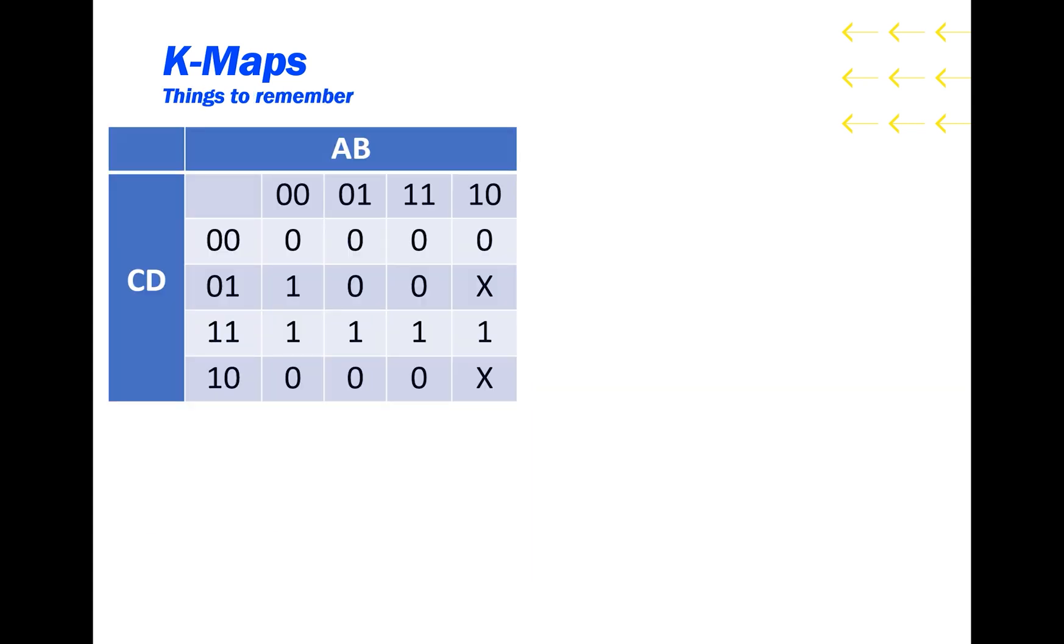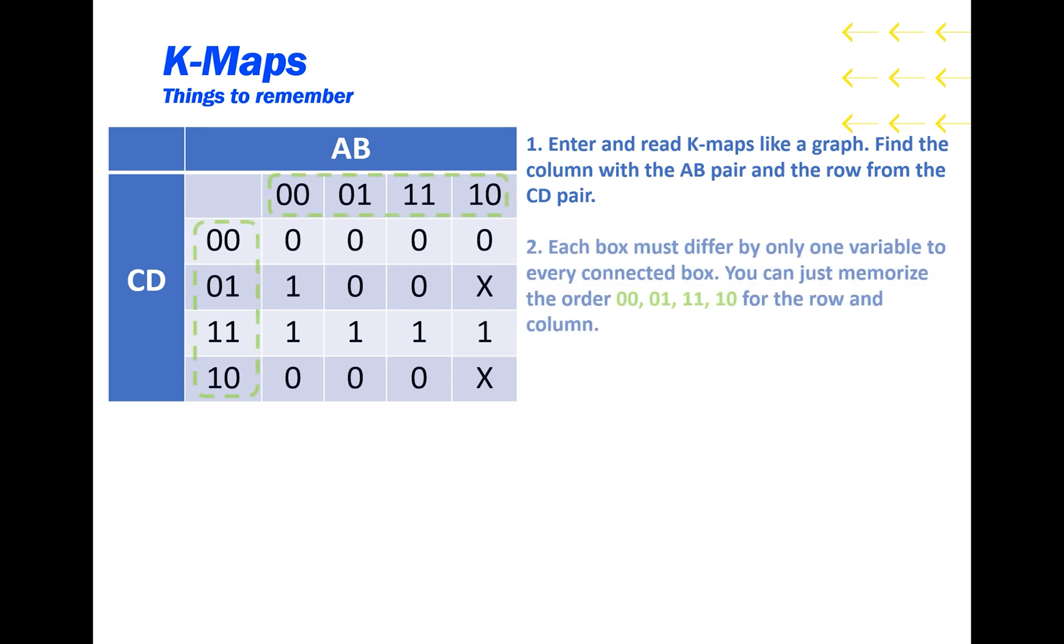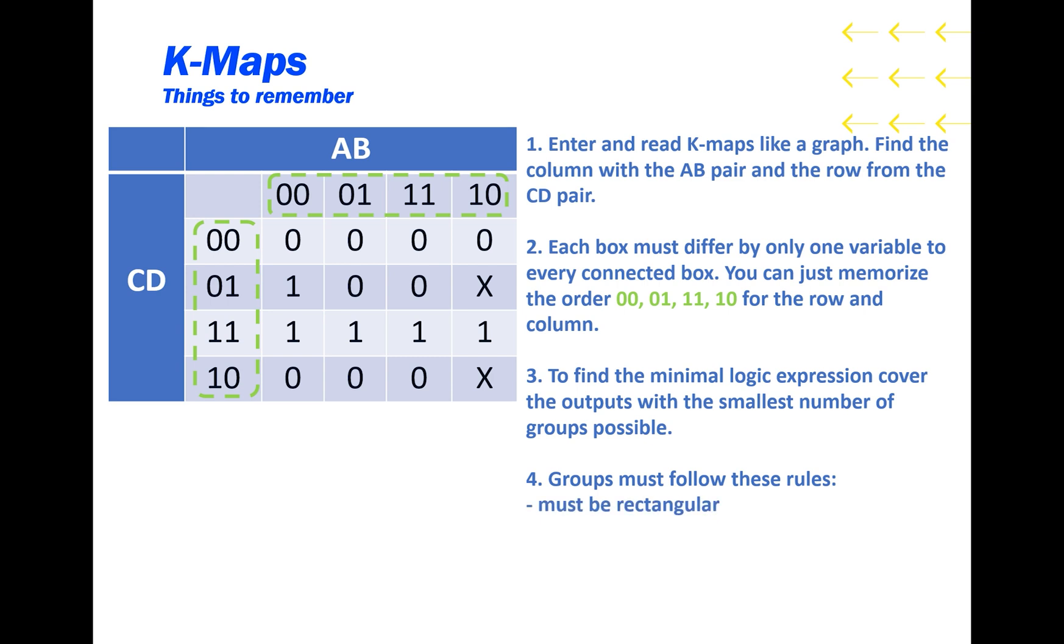So some key things to remember from this presentation. Enter and read K-maps like a graph. Find the column with the AB pair and the row from the CD pair. Each box must differ by only one variable to every connected box. You can just memorize the order 00, 01, 11, and 10 for the row and columns. To find the minimal logic expression, cover all of the 1 outputs with the smallest number of groups possible. Groups must follow these rules. They must be rectangular, they must contain only the same output, and the area must be a power of 2. Remember the groups can loop around the map.